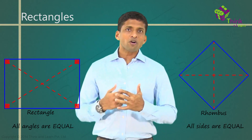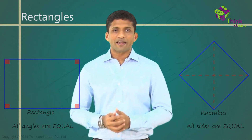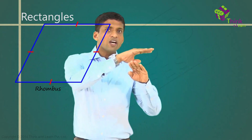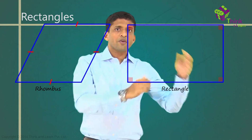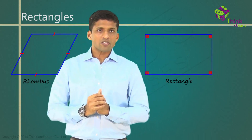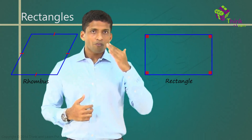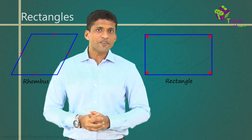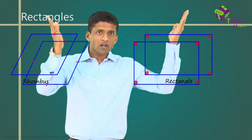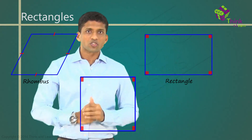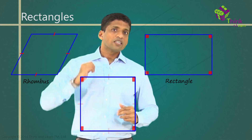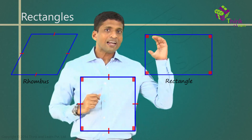Now, let's look at a scenario where both these conditions are satisfied. I'll show a rhombus here where all sides are equal, and a rectangle where all angles are equal. Both of them are parallelograms. What will be the kind of parallelogram where both these qualities are there — that is, sides are equal and angles are equal? If you bring them together, you will end up getting a square. So, a square is a parallelogram where sides are equal and angles are equal.